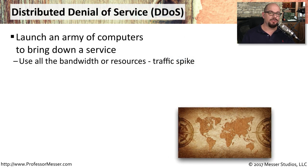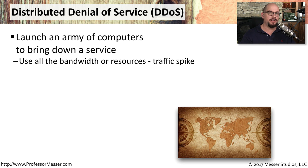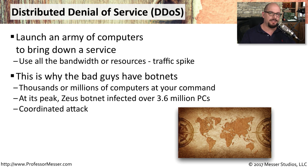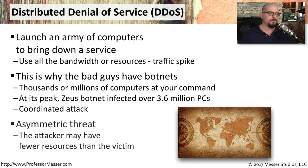A distributed denial of service is one where the service is being denied because the attack is coming from many places all at the same time. There could be an army of botnets programmed to take down a website — they come from many different locations, making it almost impossible to stop all of them. This is why bad guys spend so much time infecting computers with botnets, so they can control them and direct them. The attackers often don't have anywhere close to the resources of the person being attacked, but they take advantage of their strength in numbers.